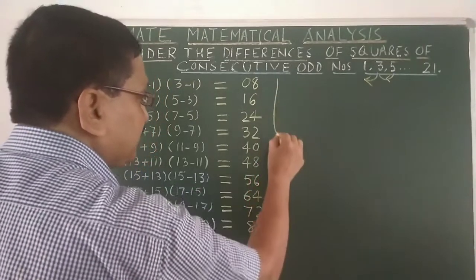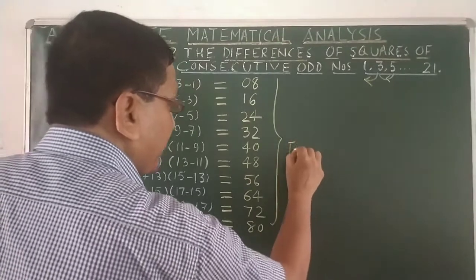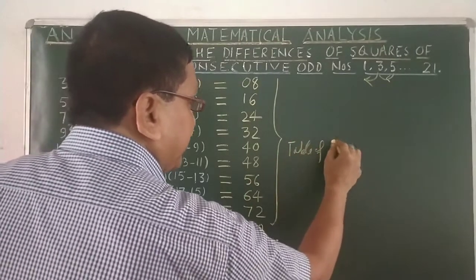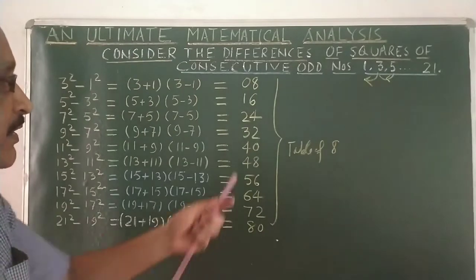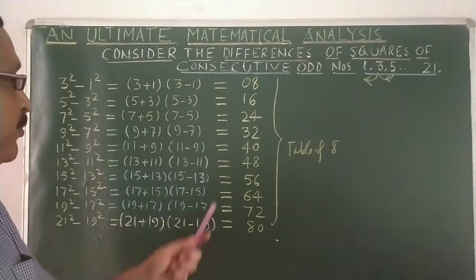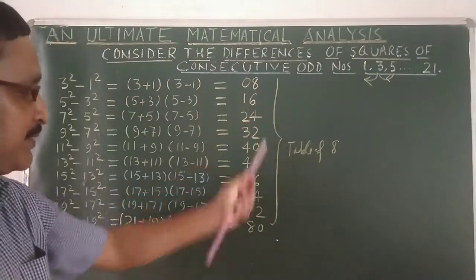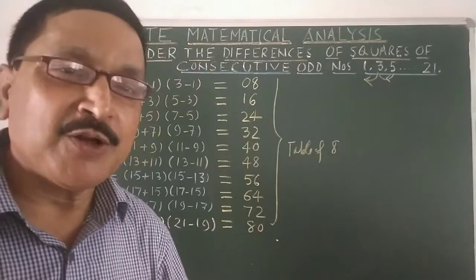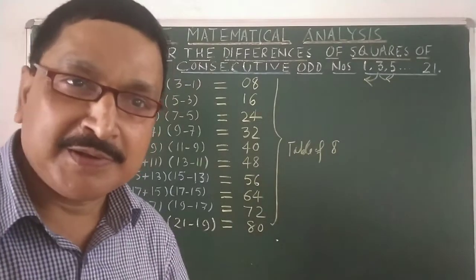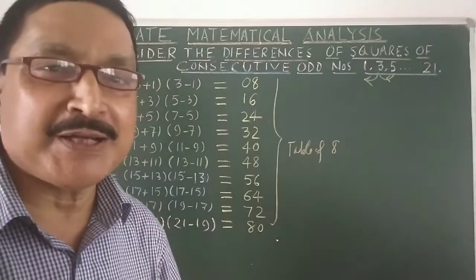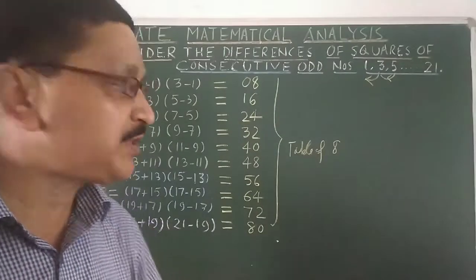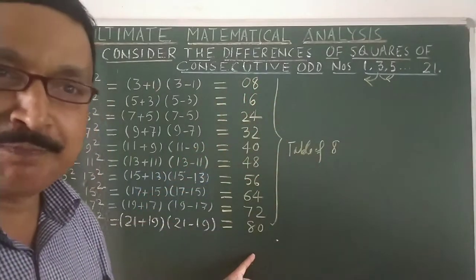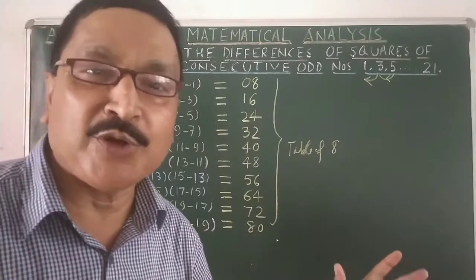Just see, students — this is the table of 8! So you have seen how successfully the analysis works. It's the table of 8. It's not a matter of surprise, but the development is a matter of surprise — how this is developed. The table of 8 came out. This new thing is always new.